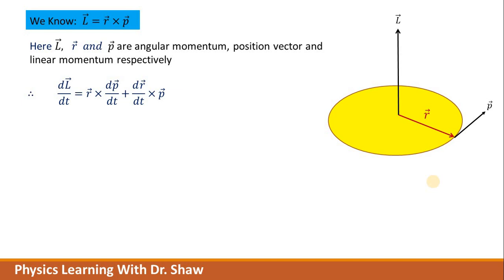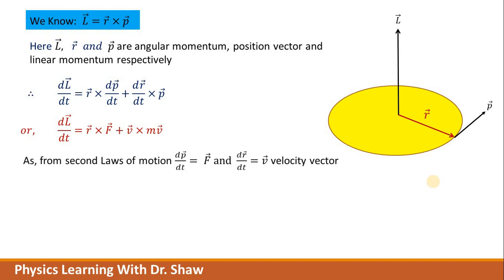From Newton's second law, rate of change of momentum is force, therefore we can write dP/dt as F. The time derivative of position vector is nothing but velocity, so dr/dt can be written as V. Also, momentum is nothing but mass into velocity, so P vector can be written as m into V.